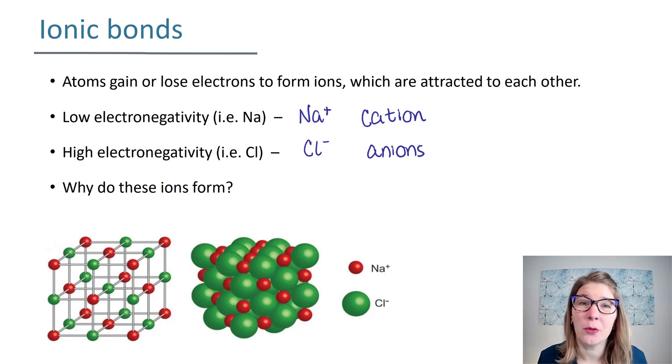So why do these things form in the first place? Stability. Everything about organic chemistry is stability. These ions are forming because the ultimate goal is to have a full outer shell of electrons. In general chemistry you call this a full octet, and when you have that full outer shell of electrons then there's a stability associated with that.